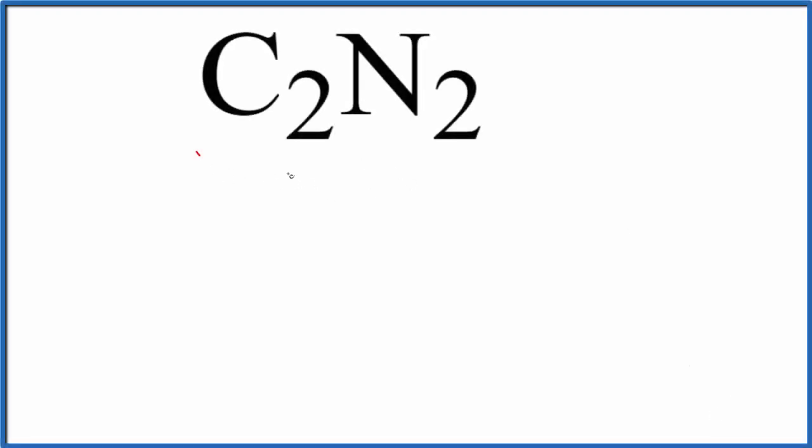To write the Lewis structure for C2N2, let's first count up the valence electrons. Carbon is in group 14, sometimes called 4A. We have four valence electrons and two carbon atoms. Nitrogen is in group 15, sometimes called 5A. We have five valence electrons and two nitrogen atoms. So we have 8 plus 10, total of 18 valence electrons for the C2N2 Lewis structure.